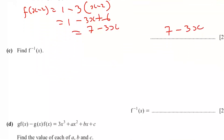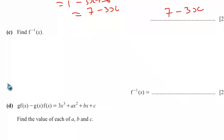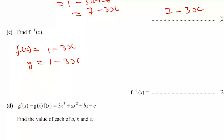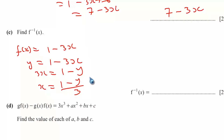Part C: find f inverse of x. f(x) equals 1 minus 3x. Let y equal 1 minus 3x and make x the subject: 3x equals 1 minus y, so x equals (1 minus y) over 3. Replace x with f inverse of x and y with x: f inverse of x equals (1 minus x) over 3.